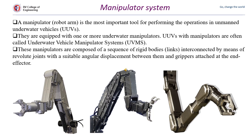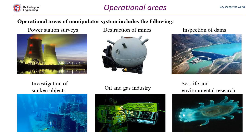The manipulator system — a manipulator is a robotic arm used for performing operations in underwater vehicles. These vehicles are equipped with one or more underwater manipulators. Unmanned underwater vehicles with several manipulators are called underwater vehicle manipulator systems. These manipulators are connected by a sequence of links through revolute joints, with grippers attached at the end effector for performing the required task.